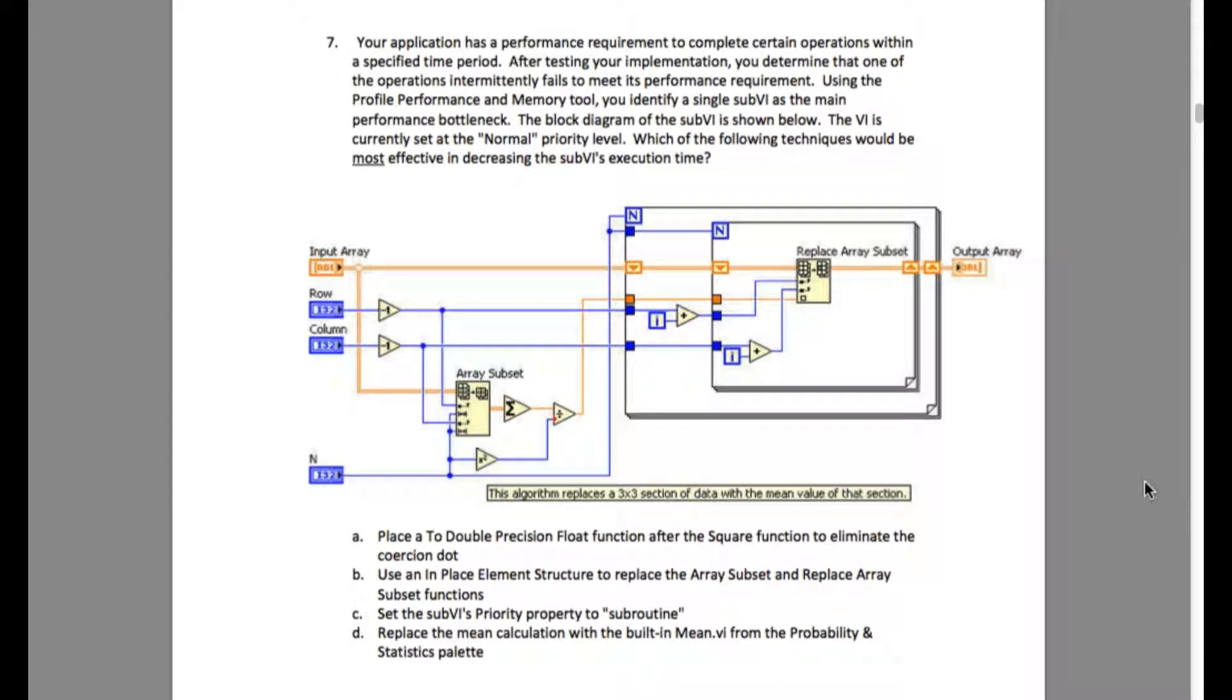Your application has a performance requirement to complete certain operations within a specified time period. After testing your implementation, you determine that one of the operations intermittently fails to meet its performance requirement. Using the profile performance and memory tool, you identify a single sub-VI as the main performance bottleneck. The block diagram of the sub-VI is shown below. The VI is currently set at the normal priority level.